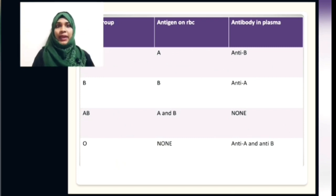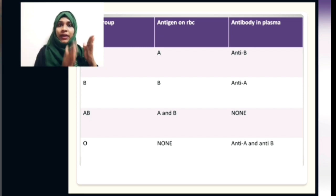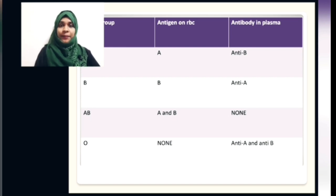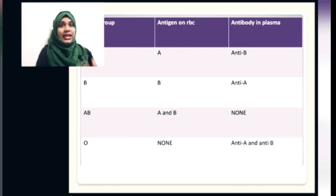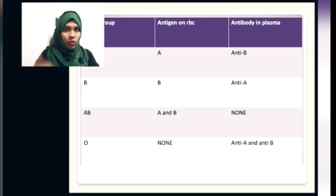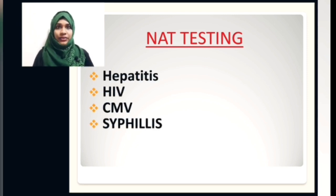Blood group A has antigen A on the surface and anti-B antibody in the plasma, so it cannot receive blood from group B. Blood group B has antigen B on the surface and anti-A antibody in the plasma, so it cannot receive blood from group A. AB group has both A and B antigens on the surface and no antibodies, making it the universal recipient. Blood group O has no antigen on the RBC but has both anti-A and anti-B antibodies.